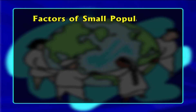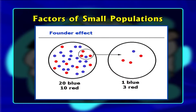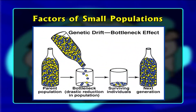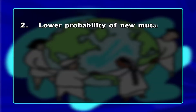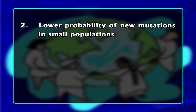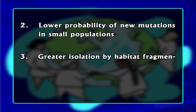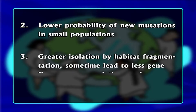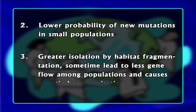Small populations have a greater probability of having less genetic variation mainly due to two factors. First, the founder effect — meaning new populations are founded by few individuals who disperse and start a new population with limited genetic diversity. Second, bottlenecks — meaning extreme reduction in population size resulting from mass mortality, which also reduces genetic diversity. Small populations also have lower genetic diversity because of a lower probability of new mutations and greater isolation due to, for instance, habitat fragmentation, which leads to less gene flow among populations and causes genetic homogenization.